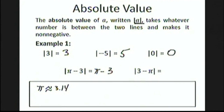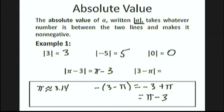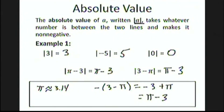The absolute value of 3 minus π is slightly trickier because 3 minus π is a negative number — π is bigger than 3. So we have to turn that into a positive number by negating it. Distributing that minus sign gives negative 3 plus π, which is neater to write as π minus 3. So the absolute value of 3 minus π is also π minus 3. In general, a minus b and b minus a are negatives of each other, and so they have the same absolute value.